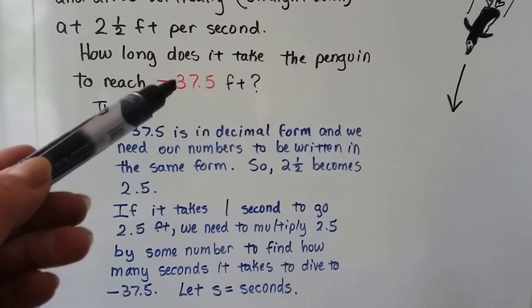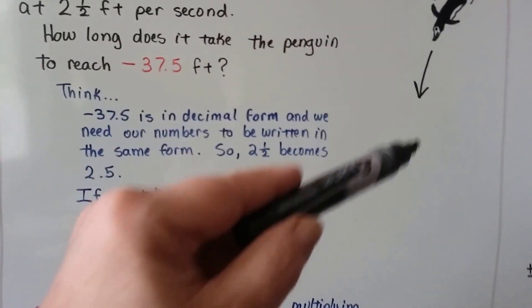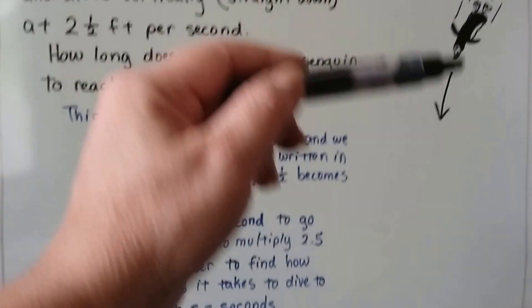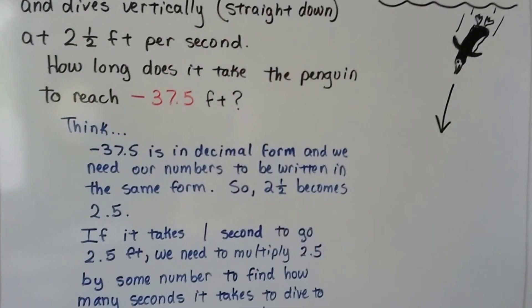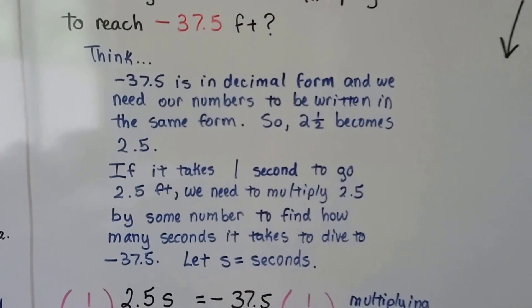Now, it really doesn't matter if the penguin is going straight up in the air or straight down. That's the distance he traveled. So, even though it says negative 37.5 feet, because he's going down below sea level, if that's the zero mark, it really doesn't matter, and I'll show you.